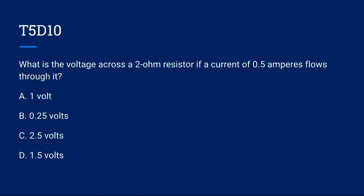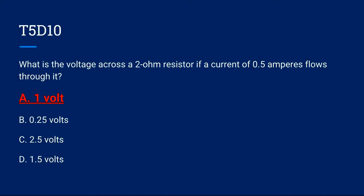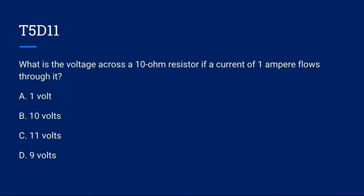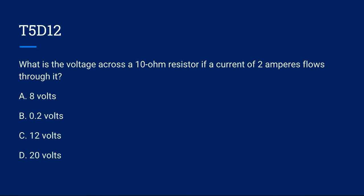T5D10: What is the voltage across a 2 ohm resistor if a current of 0.5 amperes flows through it? A. 1 volt, B. 0.25 volts, C. 2.5 volts, or D. 1.5 volts. Correct answer is A. 1 volt. T5D11: What is the voltage across a 10 ohm resistor if a current of 1 ampere flows through it? A. 1 volt, B. 10 volts, C. 11 volts, or D. 9 volts. T5D12: What is the voltage across a 10 ohm resistor if a current of 2 amperes flows through it? A. 8 volts, B. 0.2 volts, C. 12 volts, or D. 20 volts. Correct answer is D. 20 volts.